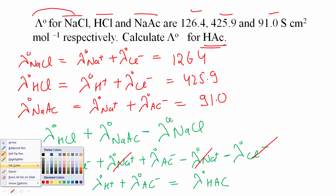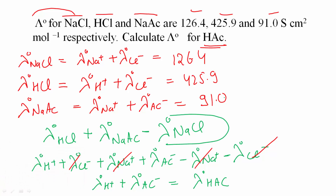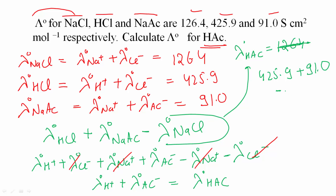So according to this equation, the limiting molar conductivity of acetic acid equals that of HCl (425.9) plus that of sodium acetate (91.0) minus that of NaCl (126.4). Solving, I get 390.5 S per centimeter square per mole.